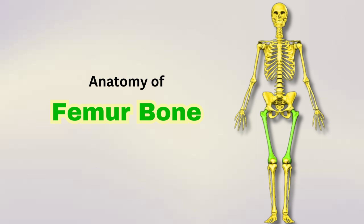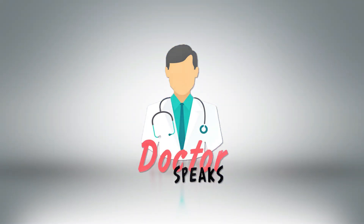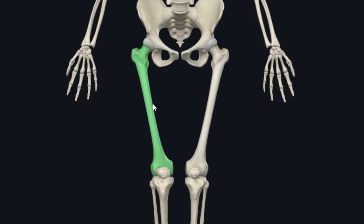Hello everyone, welcome back. As we have started the osteology of the lower limb, in the previous tutorial we discussed the osteology of the hip bone. Now let's proceed towards the anatomy of our next bone of the lower limb — the femur bone. This long bone articulates above with the acetabulum of the os coxae to form the hip joint, and below it articulates with the tibia and the patella to form the knee joint.